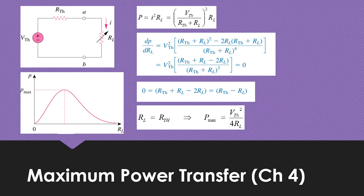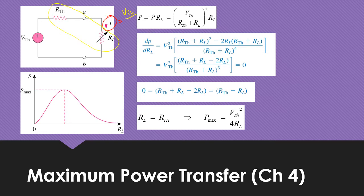And what is this? This is basically done by varying the load resistance. If you look at the current transferred to this load, the current is equal to the Thevenin voltage divided by the resistance in series, which is RL plus RTH.